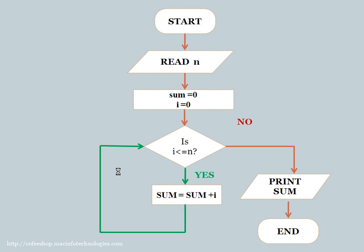We have one more example here where we are using a loop to calculate the sum of n numbers. We start the program using the initialize block, take input n from the user, and initialize sum and i to 0. Here i is the loop variable and sum is the variable in which we accumulate the total. We check if i is less than or equal to n. Until that condition is true, it calculates the sum by adding the value of i. We also need to add an increment statement — i plus plus — after sum equals sum plus i.